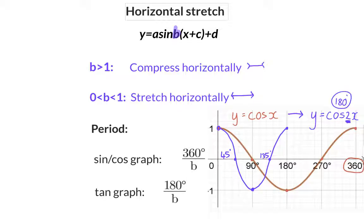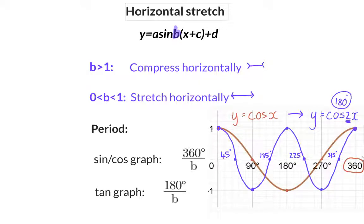This pattern will repeat itself, and 45 degrees later the next x intercept will be found, then 45 degrees later a turning point, another 45 degrees later another x intercept, and we'll finally be at 360 degrees where we've completed two wavelengths. From this you can see that it is possible to draw the sketch without using your calculator. As soon as more than one of the four possible transformations exists in the equation, however, the calculator does make everything a bit easier.